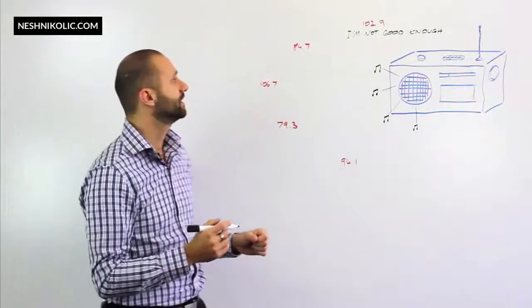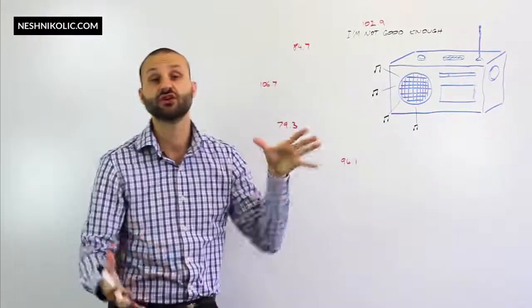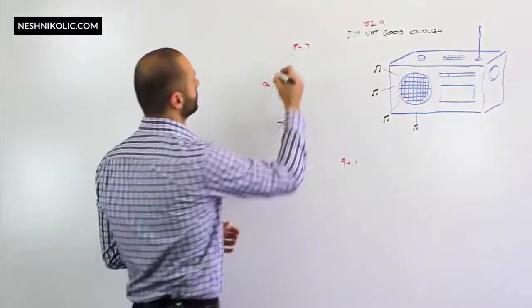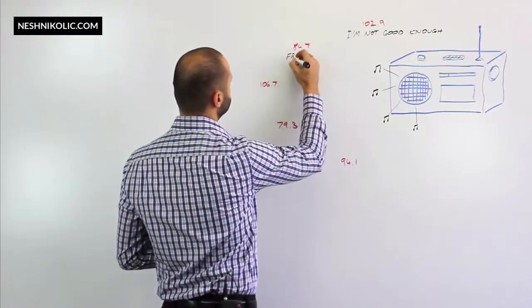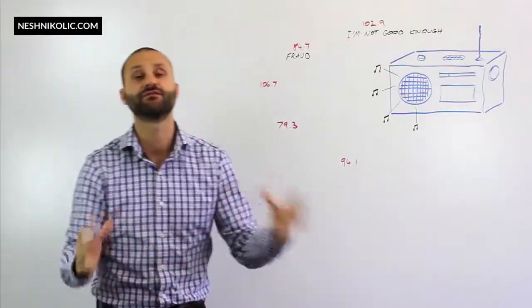There are other thoughts that show up and we can bring them into a radio station because there's lots of thoughts about I'm a fraud as an example. So this is 84.7 fraud.